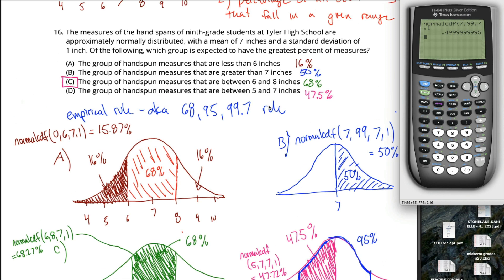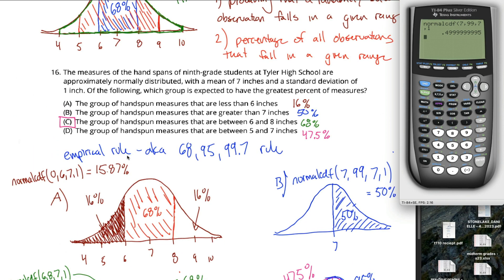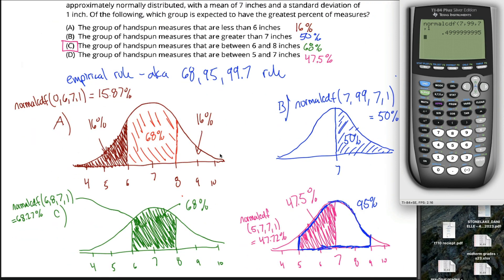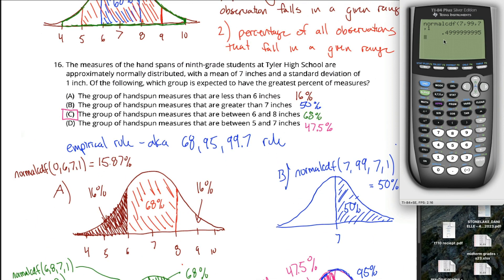Two different ways to do this question: with the empirical rule — the downside being you have to be a little bit clever in how you draw the pictures — or with your calculator's normalCDF function — the downside being you have to remember how to use it.